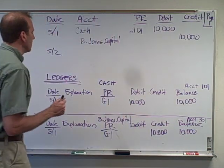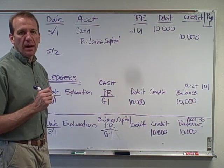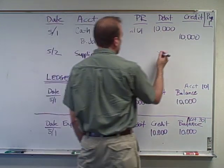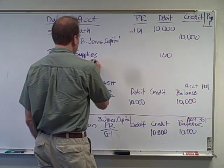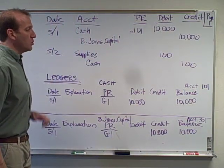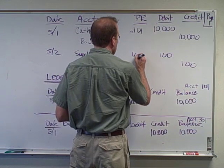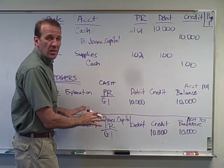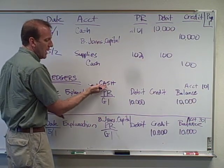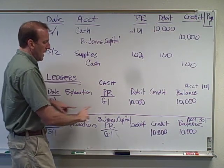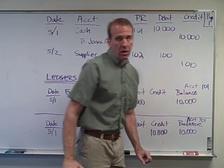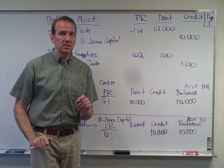Let's do a second transaction. Let's say that we're buying some supplies with cash — $100 worth of supplies. So we would debit supplies, because supplies is an asset and it increases with a debit. And since we're paying for it, we're going to credit cash. Let's say supplies is account 102. So I would go to account number 102 and put this transaction. There would be a separate page that would say supplies, and I'd put the date — 5-2 — it's coming from page G-1, I would have a $100 debit, and then a balance of $100. That would be my entry into the supplies ledger account.